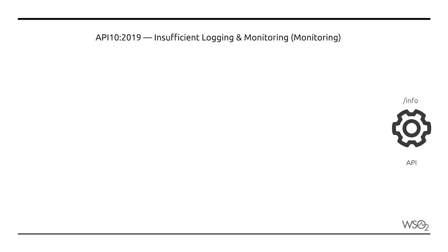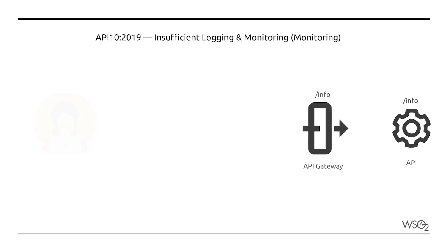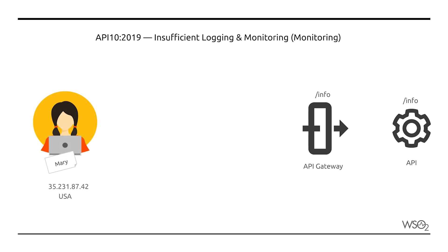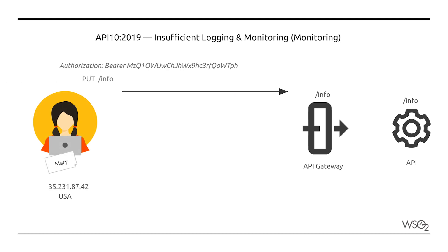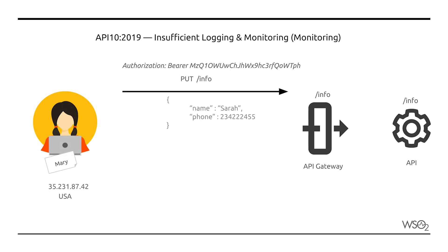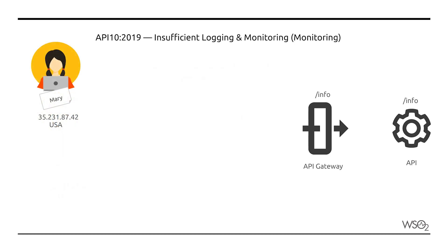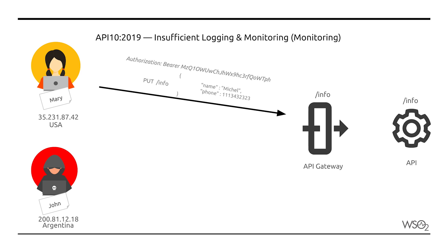Let's take a look at a scenario where real-time monitoring is important. Mary lives in the US and updates information via her application, which invokes the info API exposed via an API gateway. The API gateway is able to identify that Mary primarily uses the API from the US based on the IP address of her device. An API gateway can be used to monitor API traffic for anomalies in access patterns.